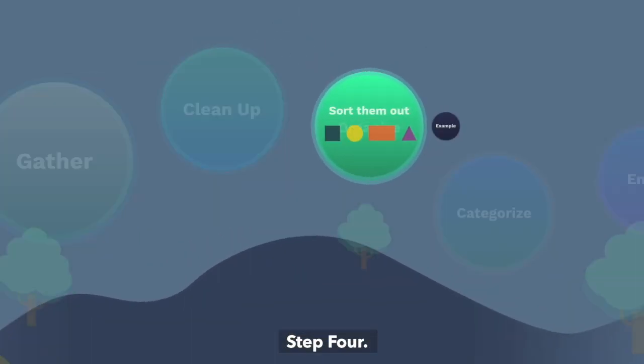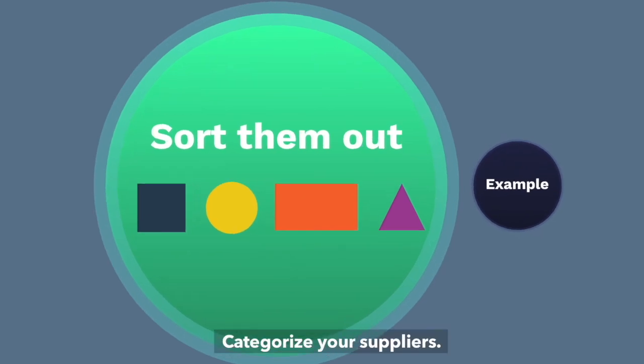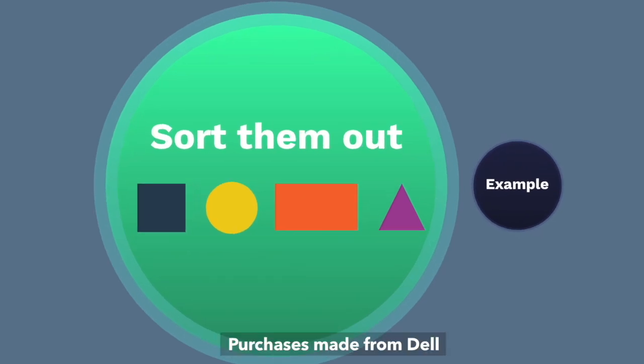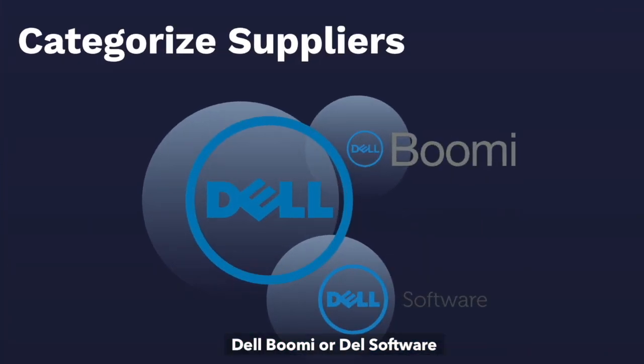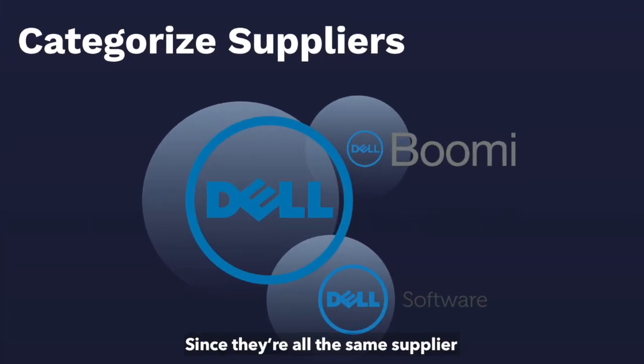Step 4: categorize your suppliers. Purchases made from Dell, Dell Boomi, or Dell Software should all be grouped together since they're all the same supplier.